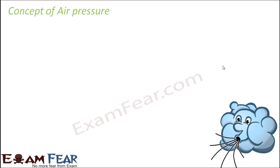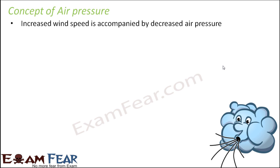Now how exactly does air pressure control the movement of air? Since movement of air is wind, we are basically trying to see how wind is related to air pressure. Increased wind speed is accompanied by decreased air pressure — this is a very important concept of air pressure.